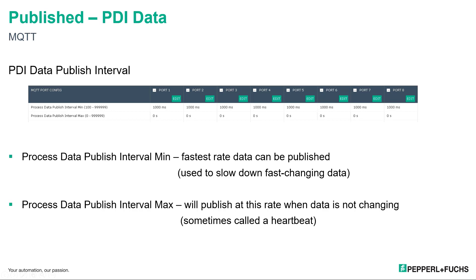This next section is publishing PDI data. Below, you can see the PDI data publish interval, which contains the interval min and the interval max. The process data publish interval min is the fastest rate data can be published. So if you have data that is being published at a fast rate and you want to slow that down, you can implement this interval min at a lower rate, and the data will start to be published at this lower rate — it is used to slow down fast-changing data. The process data publish interval max will publish at this rate when data is not changing. If you have data that is consistent and not changing, and you want it to publish anyway, you can implement this interval max, which will force the data to publish even though it's not changing. It can also be called a heartbeat.